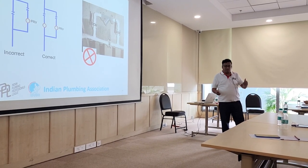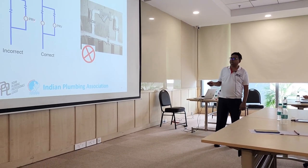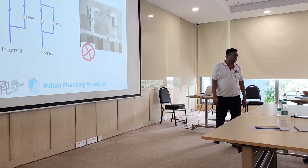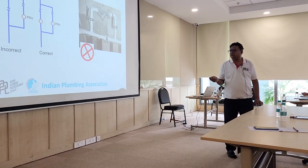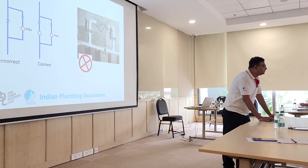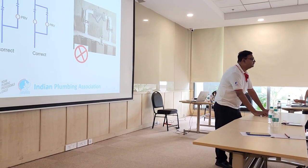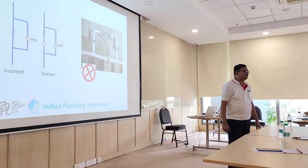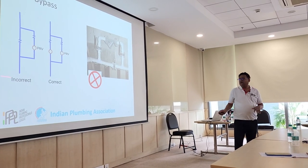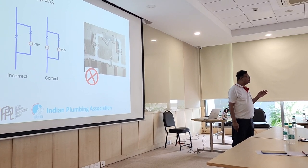Now, can someone tell me why one bypass arrangement is incorrect and the other is correct? In the incorrect version, the PRV is installed on the bypass line, not on the main line. One reason: if someone opens the bypass line, the below-floor fixtures could be damaged. Second: a valve reduces flow, not pressure — so it is not a PRV.